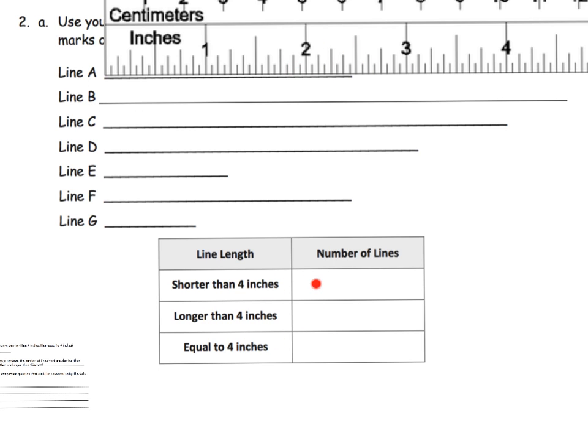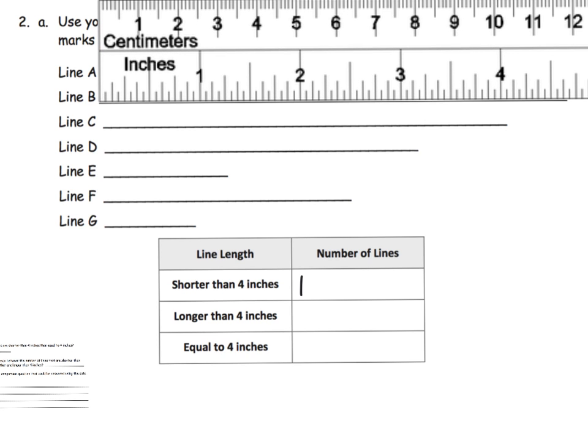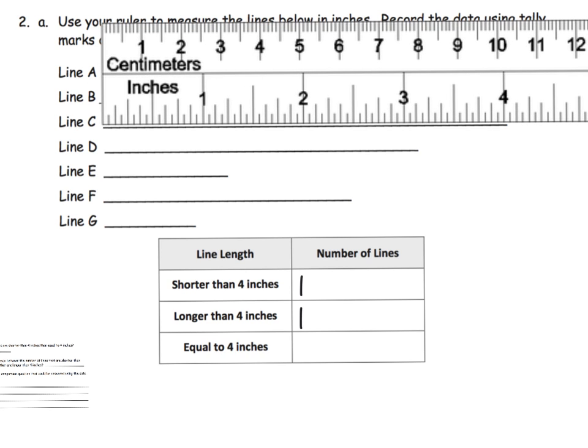So that is shorter than four inches so I'm going to do a tally mark. And then I'm going to go to B and B looks like, oh boy, B is way over here beyond the four inches so that's definitely longer than four inches. C looks to be exactly four inches so I'm going to put a tally mark here.